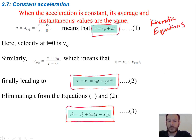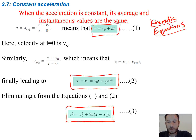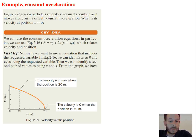When acceleration is constant, we can use a set of useful kinematic equations that simplify everything. These straightforward equations will be very useful going forward. In this example, a particle's velocity v is plotted versus its position as it moves along the x-axis with constant acceleration, and we need to find its velocity at x = 0.